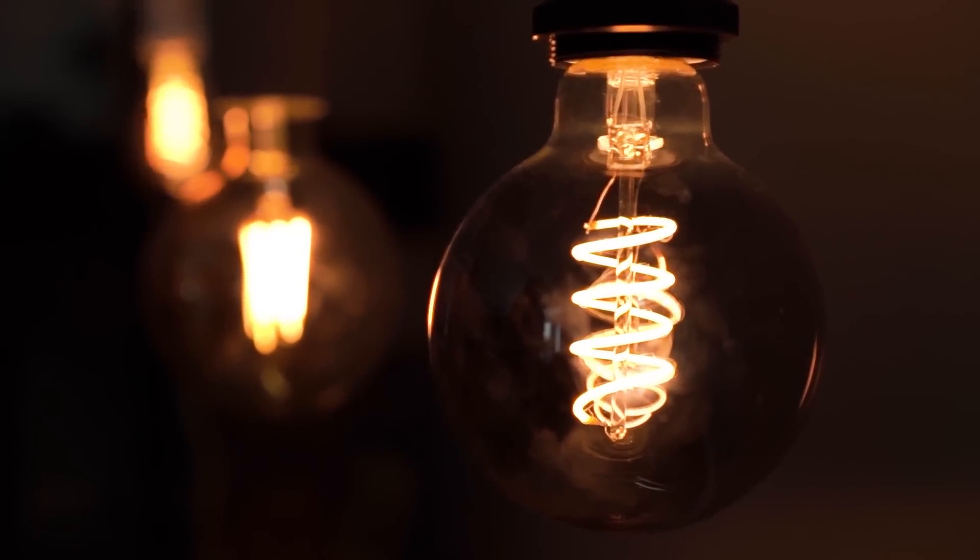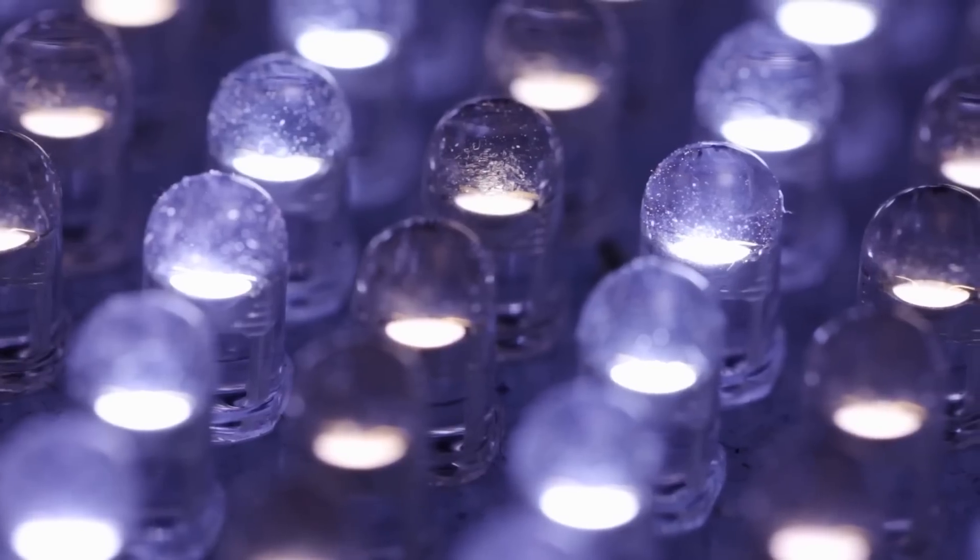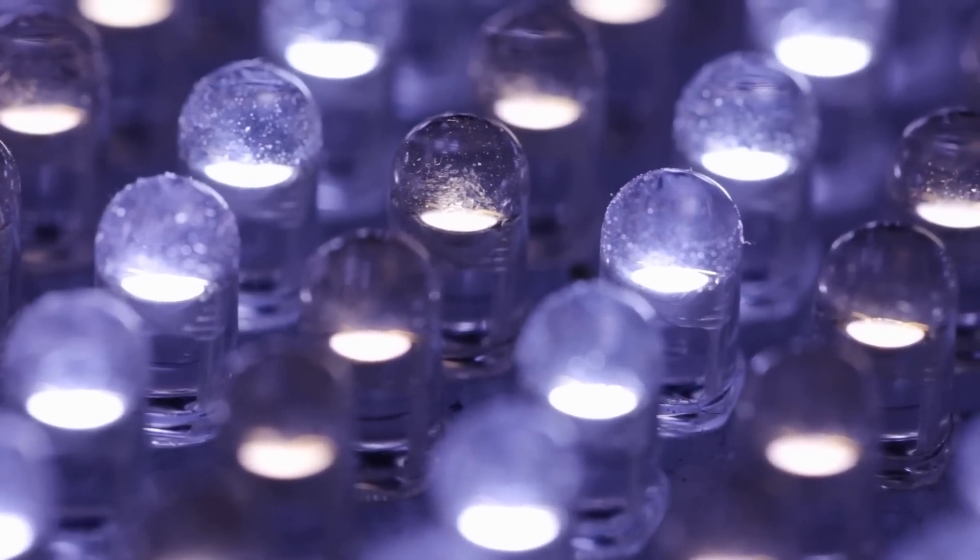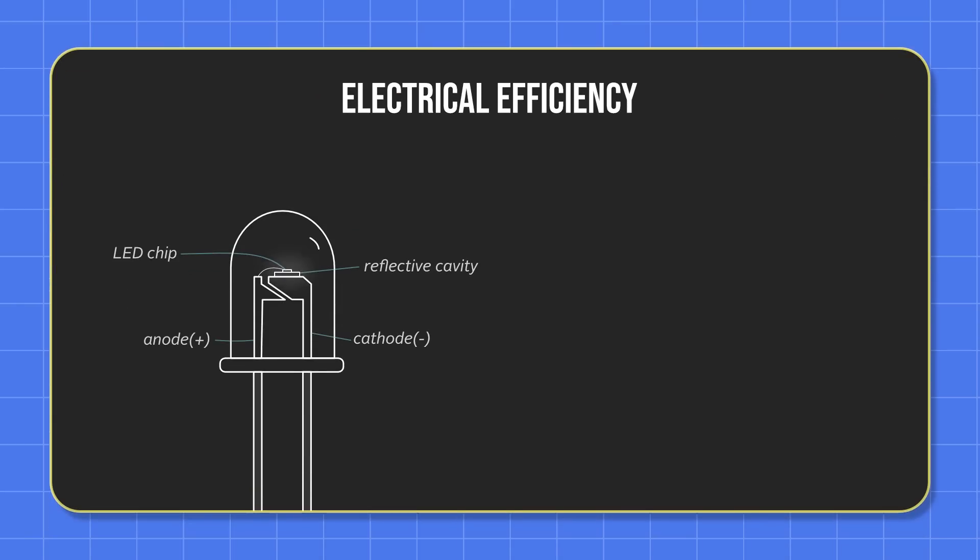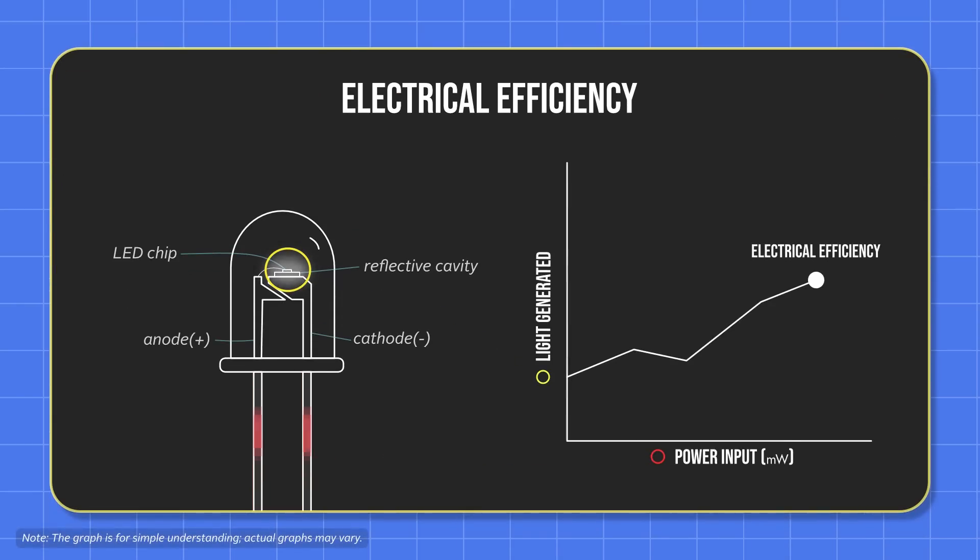For incandescent bulbs, the other 97% of the energy turns into heat, but for LEDs, the inefficiencies are a little more complicated. As I started to look into this, the most obvious type of efficiency for me was known as electrical efficiency. It measures how much light is generated inside the LED compared to how much power it's using.